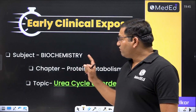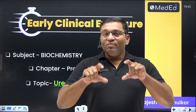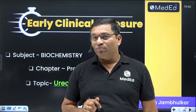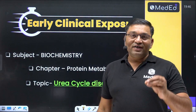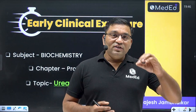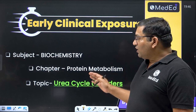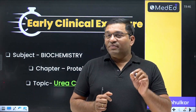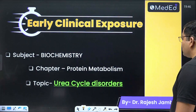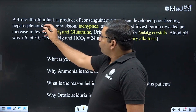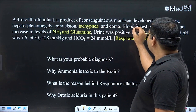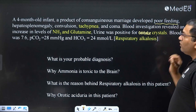This is a very important topic for first year because it is connected with the urea cycle, which is very important in protein metabolism. It is one of the frequently asked LAQs in the first professional examination. In the CBME curriculum you can get case-based or SA-type questions on urea cycle disorders. Let's discuss the clinical case: a four-month-old infant — infant means below one year of age — a product of consanguineous marriage, who developed poor feeding.